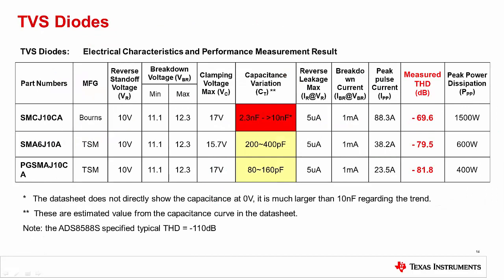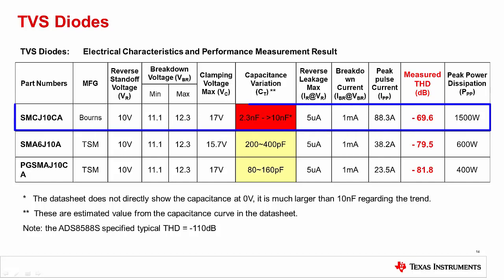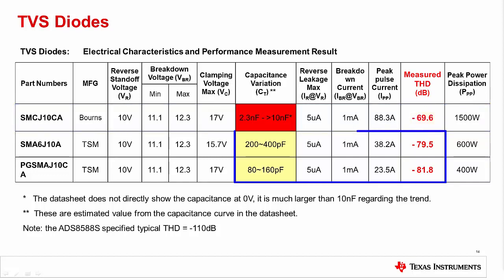Knowing that the capacitance of the TVS diode has a strong impact on distortion, let's compare the measured results for multiple TVS diodes with different capacitance specifications. This table compares three different diodes with three different capacitance levels. The first is the device we used in the previous example — a very commonly used TVS device with a capacitance ranging from 2.3 nanofarads to 10 nanofarads. When using this device, the ADC has a THD of negative 69.6 dB, which is substantially worse than the negative 110 dB typical specification for the ADS8588S. The other two devices show that performance improves as capacitance decreases.